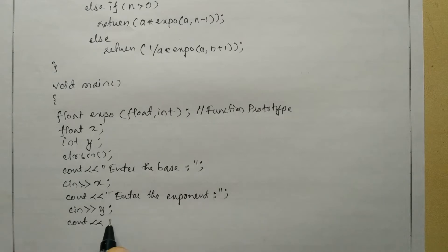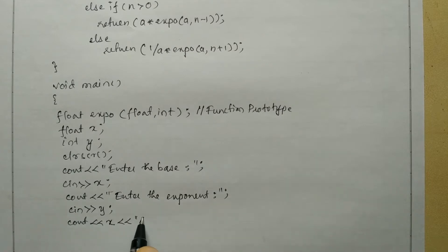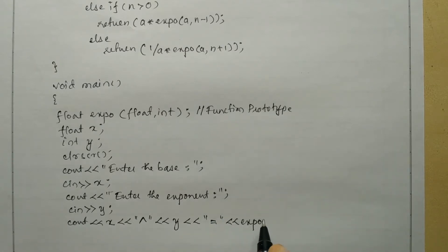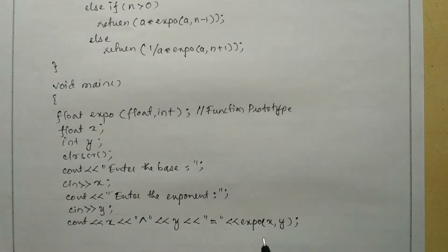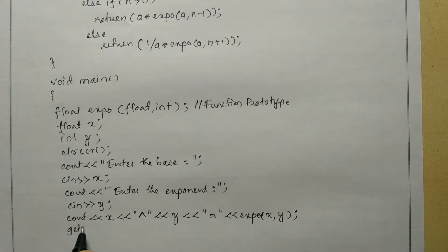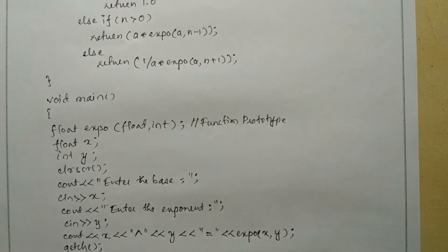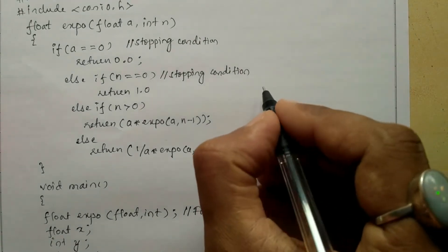Next I write cout with the stream insertion operator to print x, then the caret symbol for 'to the power', then y, then equal to, and then the function call expo(x, y). I also add getch() and a curly closing brace for the main function. Now let me trace through an example.